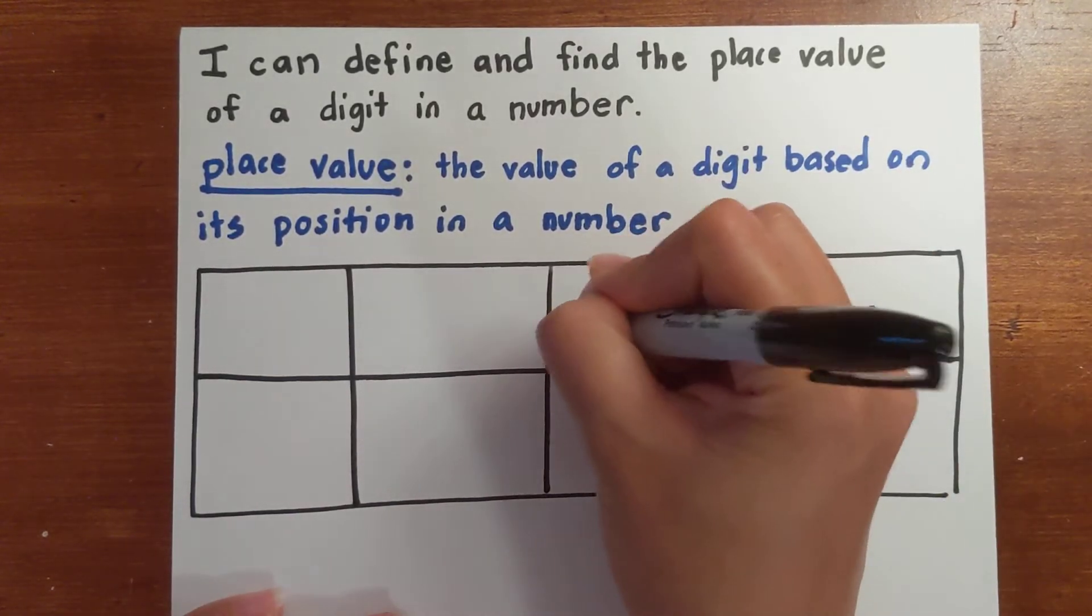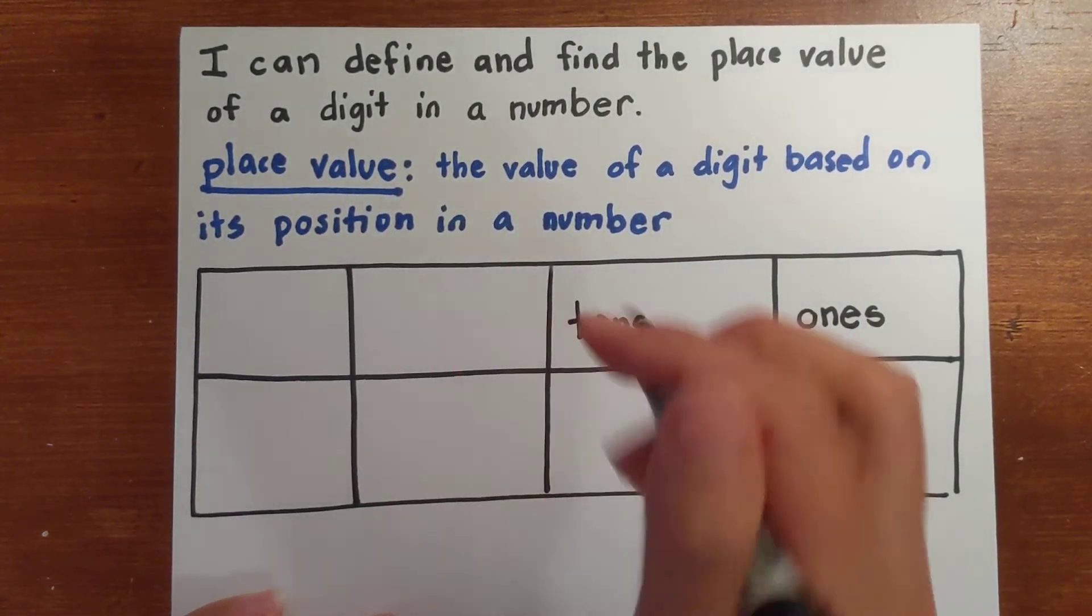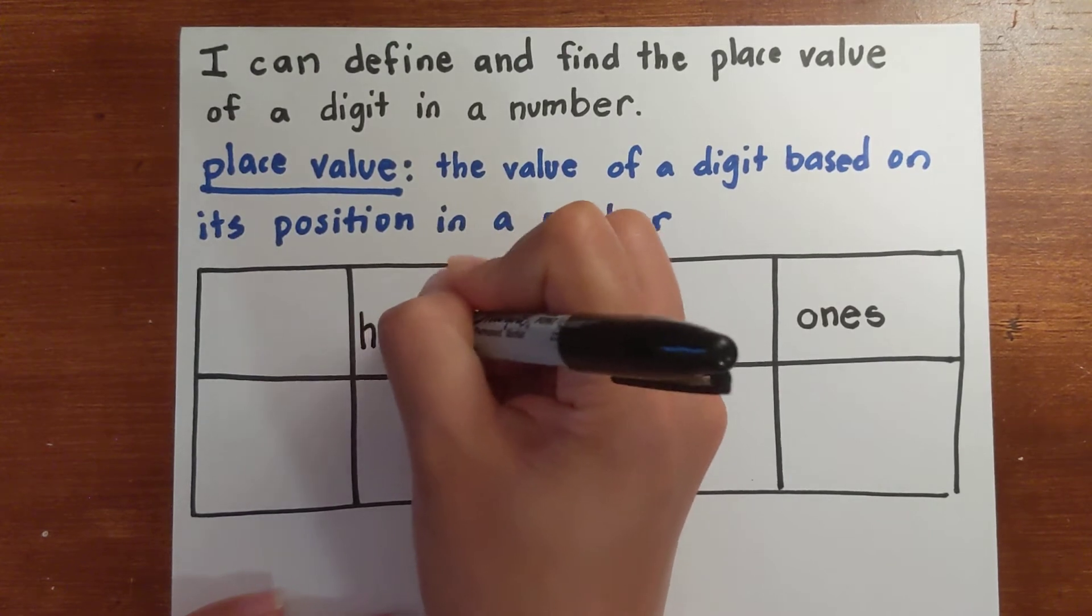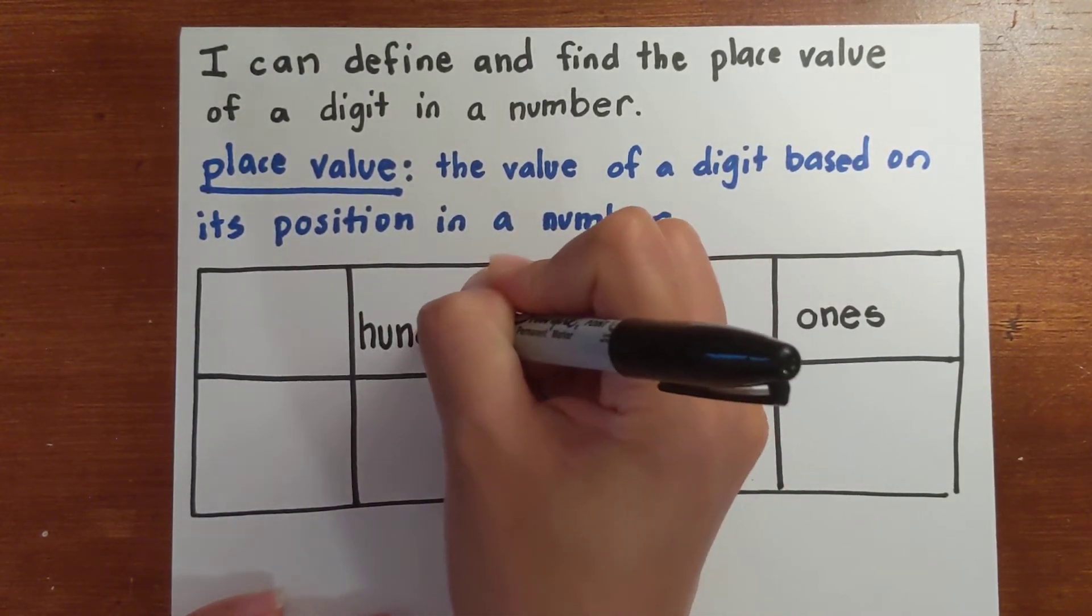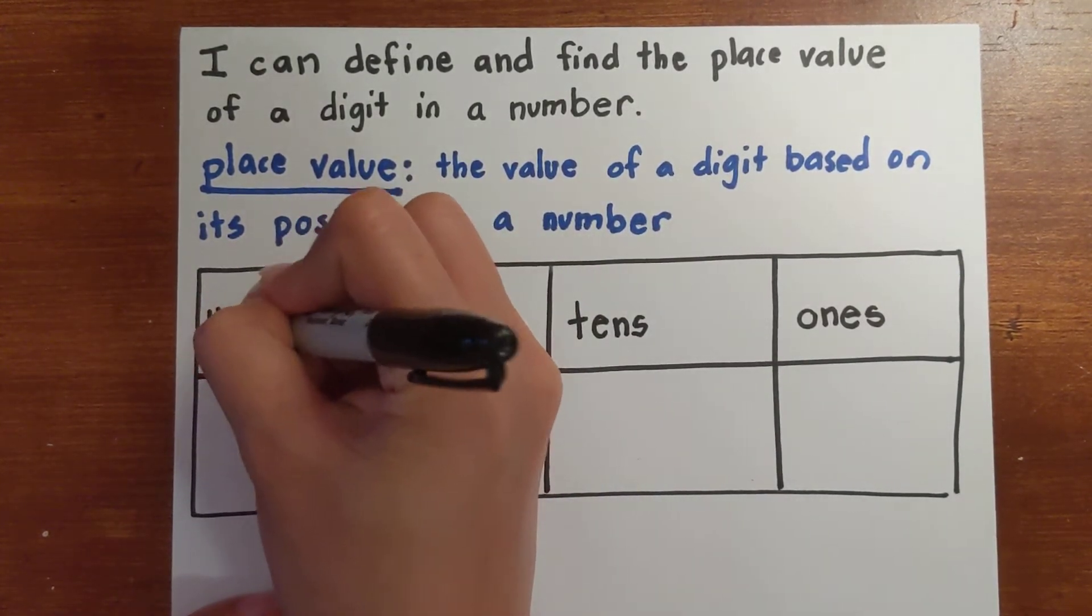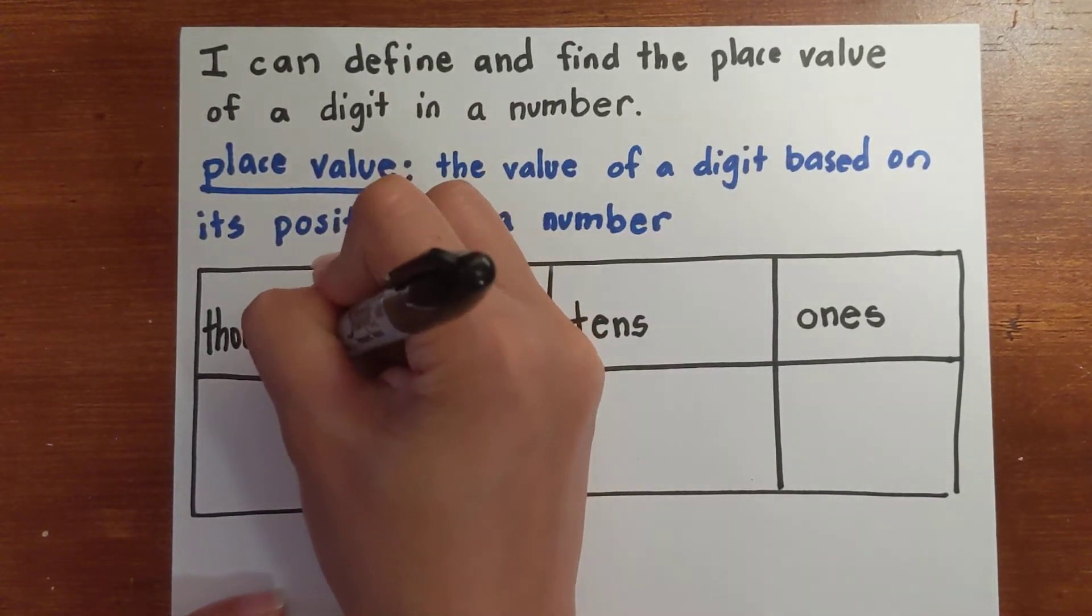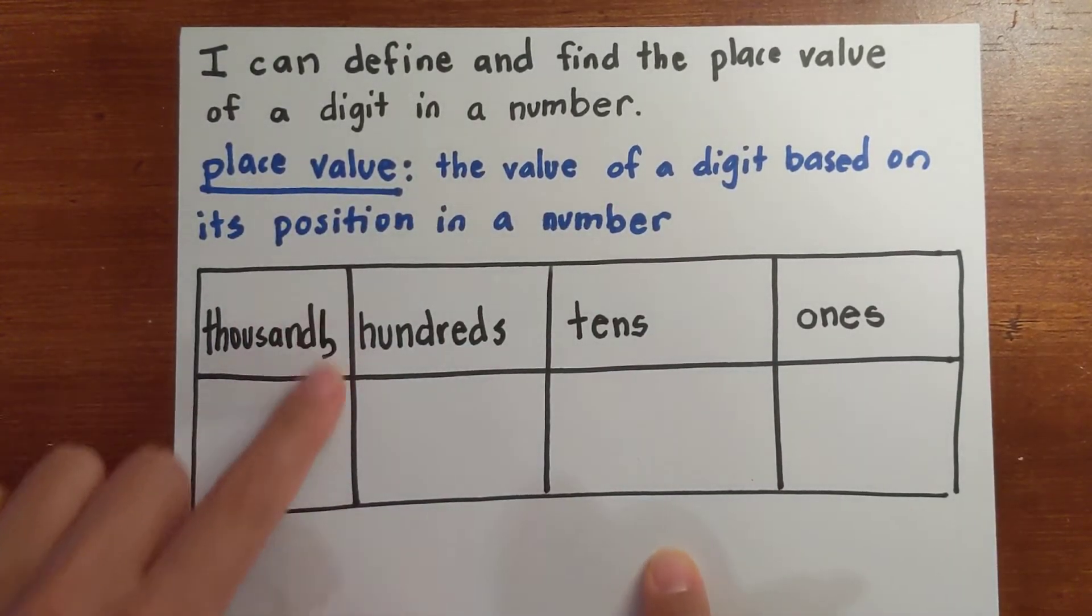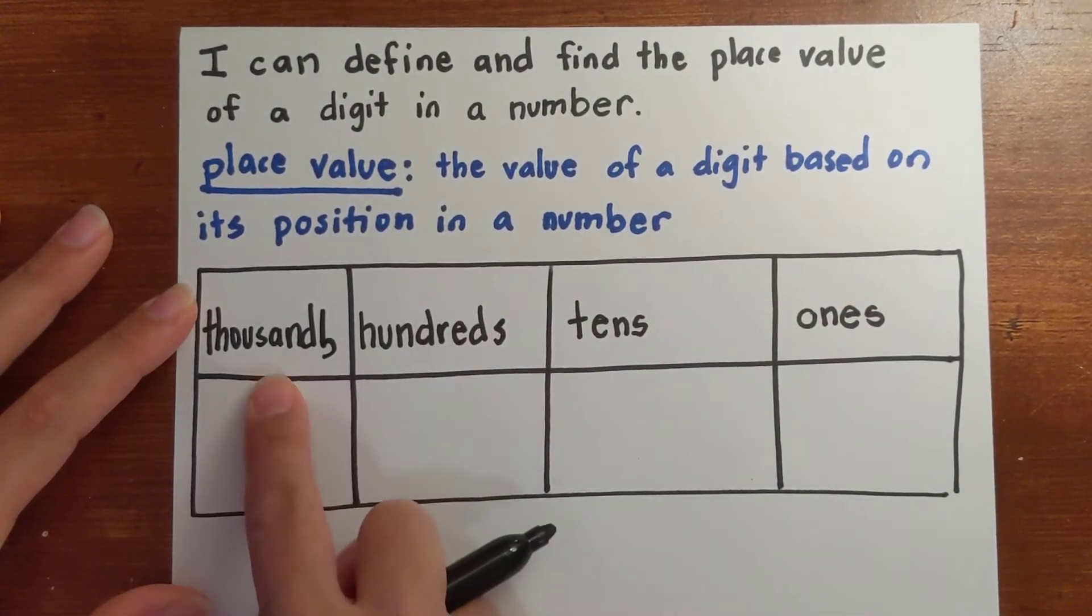Then you have your tens. The next over is your hundreds. And the next place value over is your thousands. So you have your ones, tens, hundreds, and thousands.